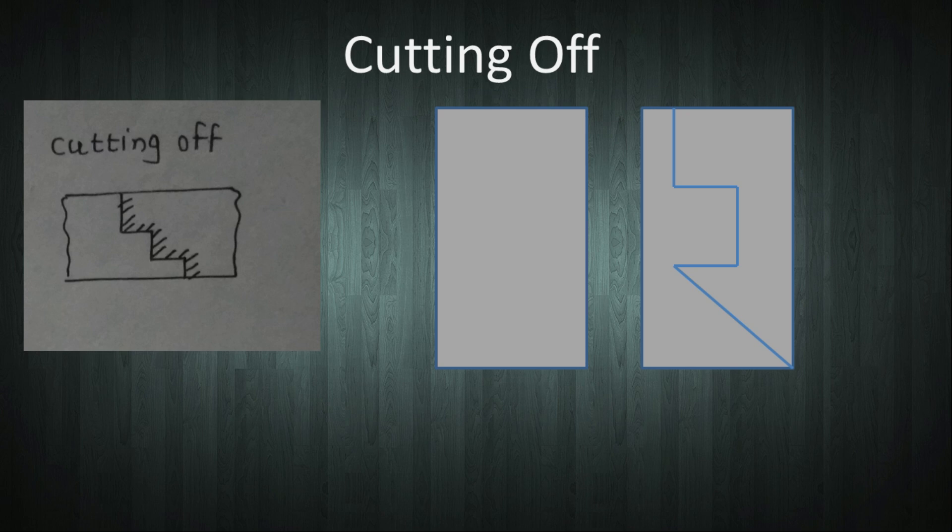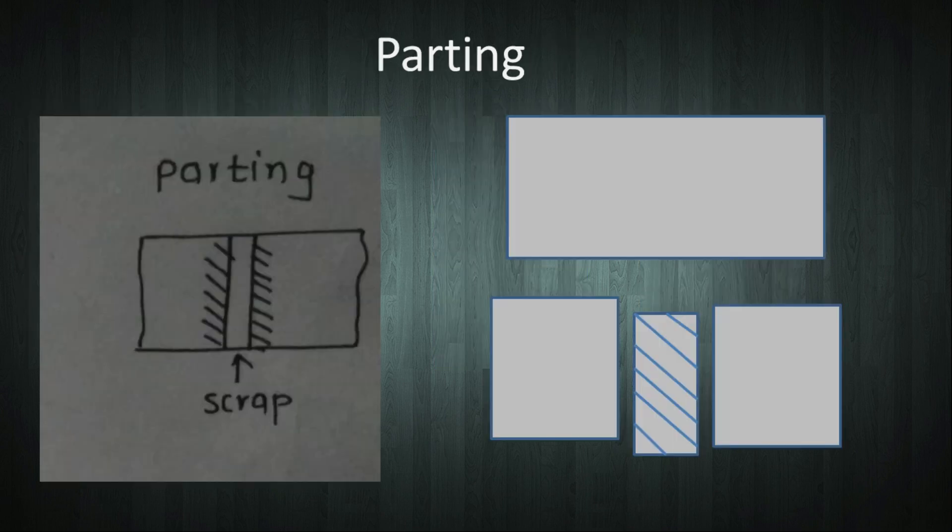The next operation is cutting off. In this operation, the workpiece is cut into two pieces by shearing as per required shape. The next is parting. In parting, two pieces at a distance apart are cut down by removing scrap in between them.